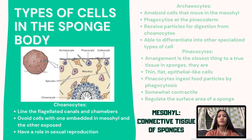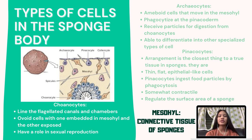Choanocytes also have a role in sexual reproduction. The second type are archaeocytes. Archaeocytes are amoeboid cells that move in the mesohyl. They can phagocytize at the pinacoderm and receive particles for digestion from choanocytes. They are also able to differentiate into other specialized types of cells, such as flerocytes, spongocytes, sclerocytes, and lophocytes.